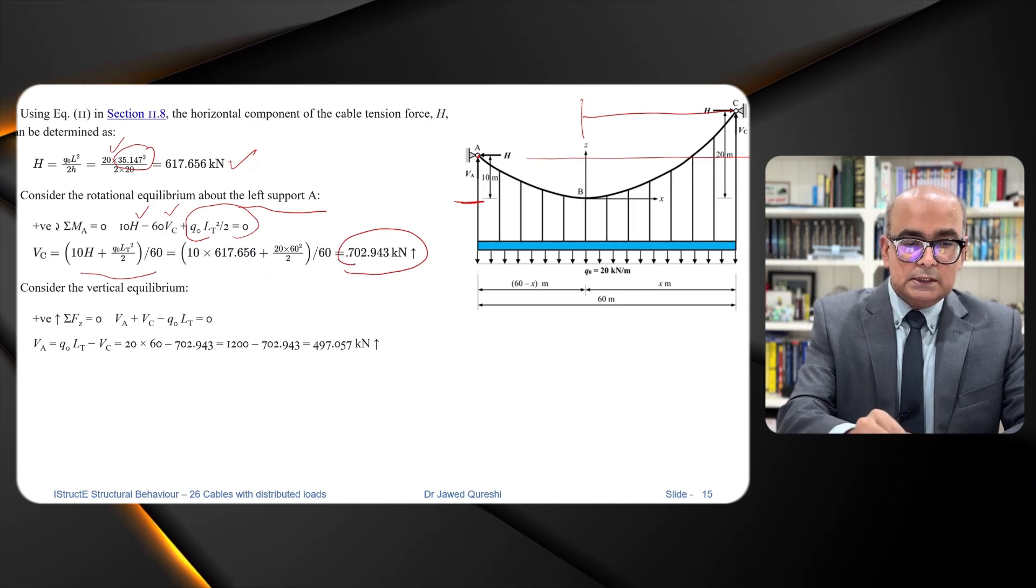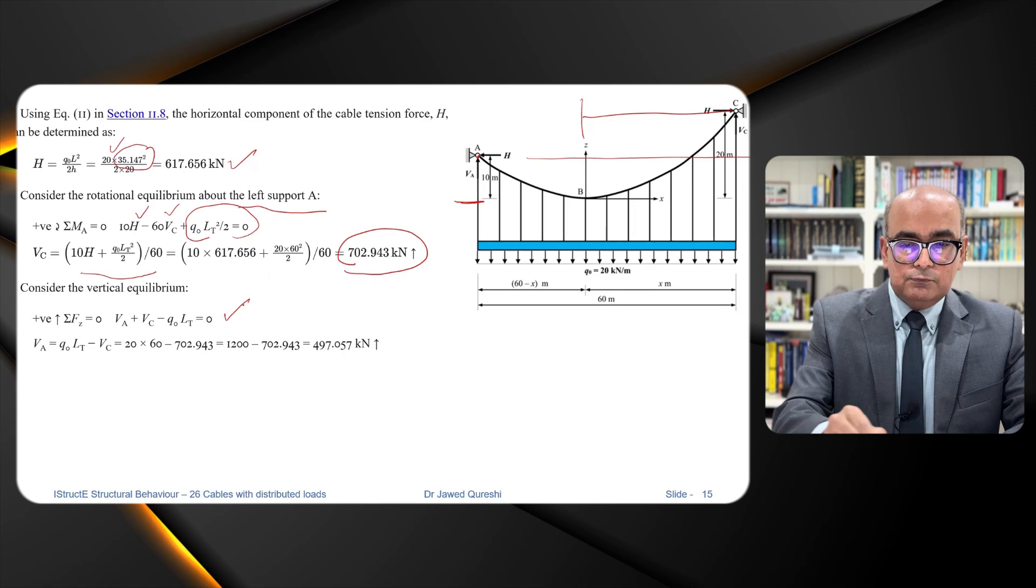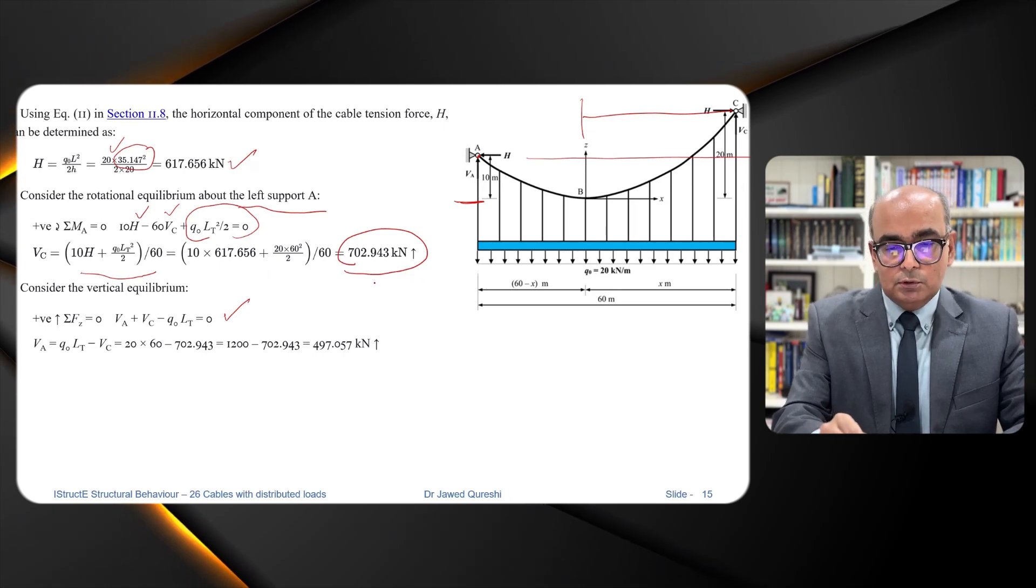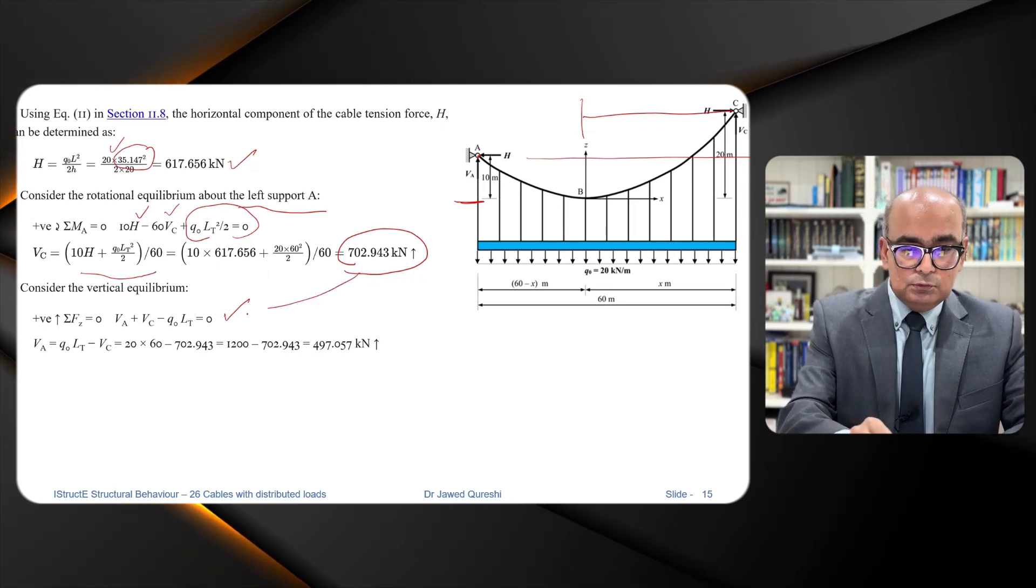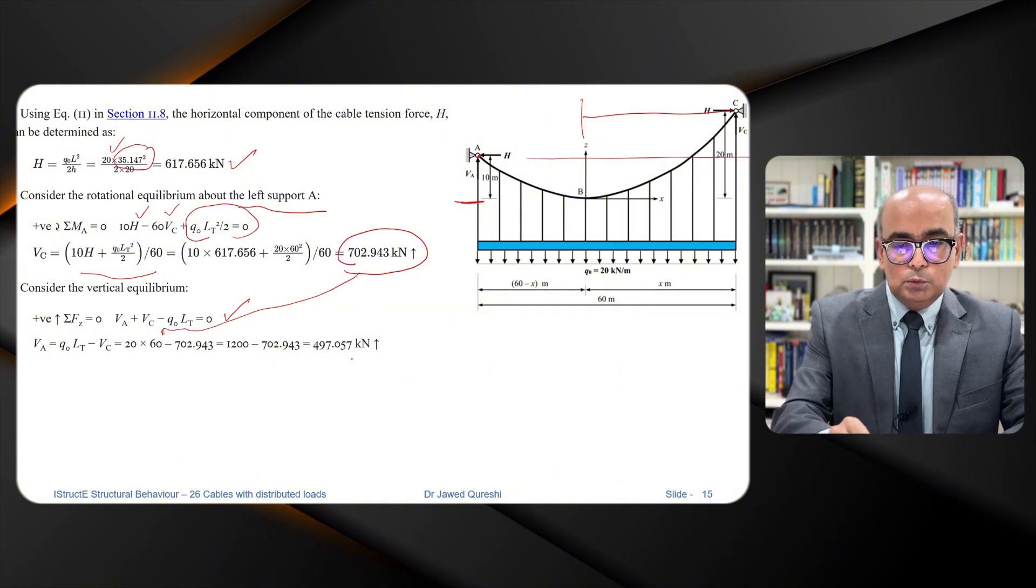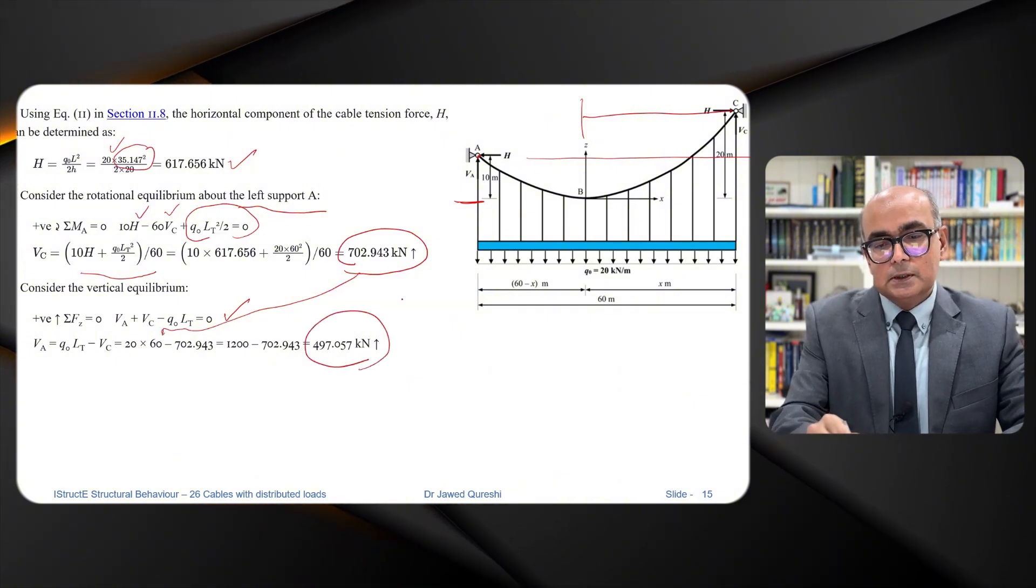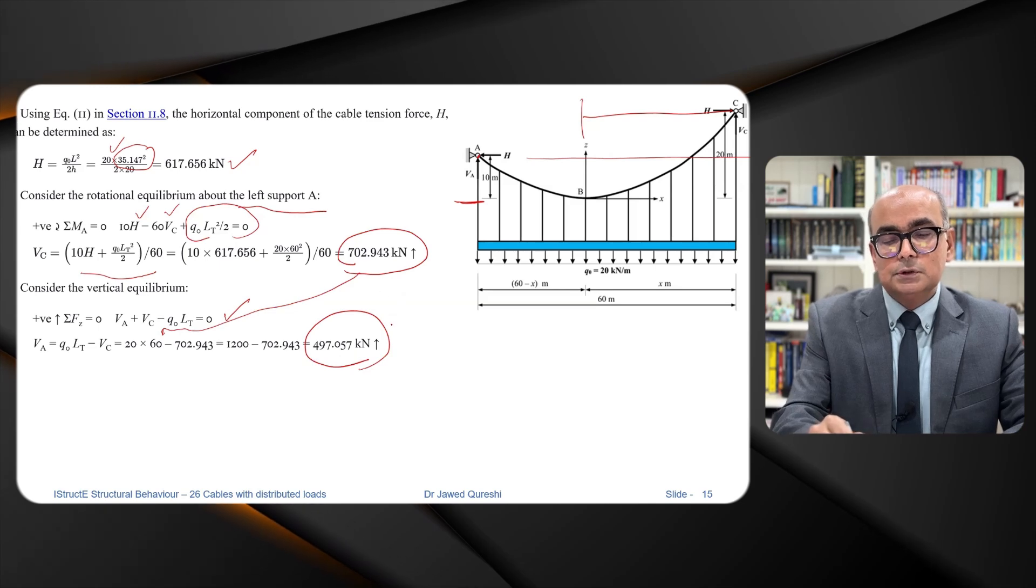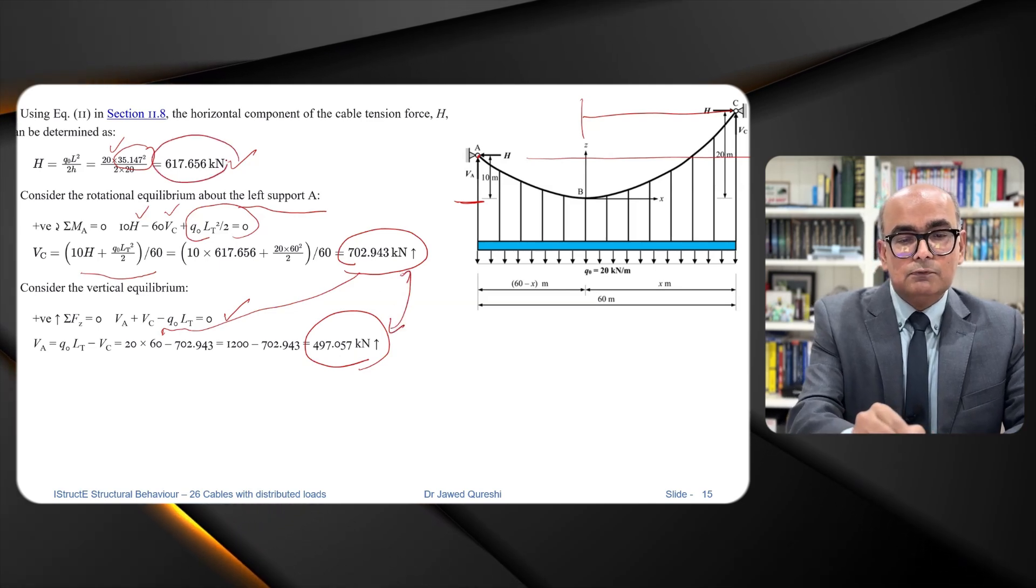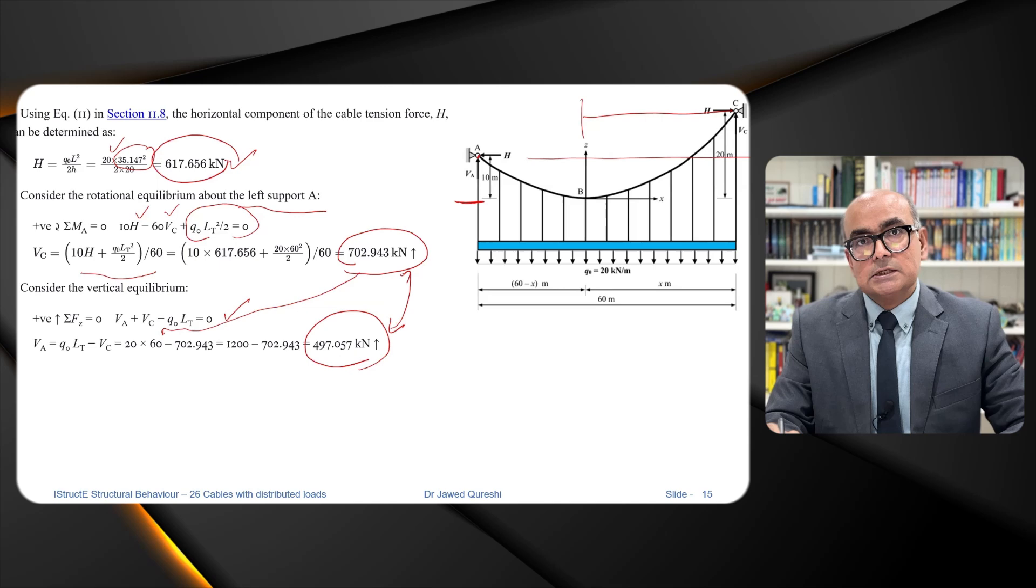Again using the vertical equilibrium summation of all vertical forces equal to zero. When we put this value back in here we get value of horizontal reaction. Now we have got both vertical reactions and we have got horizontal reaction as well.